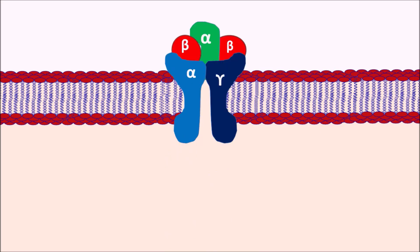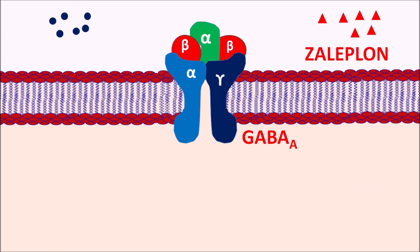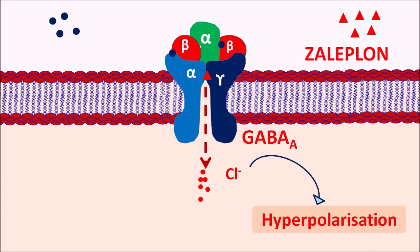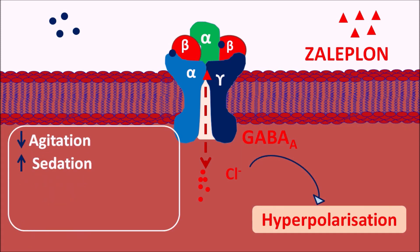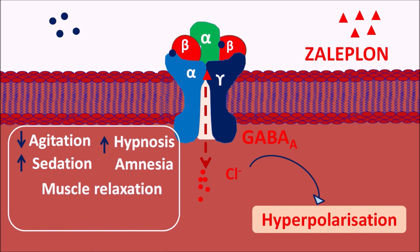Now let us see how this drug acts. Within the CNS, GABA-A receptors are expressed, which are ionotropic receptors and pentameric in nature — they are made up of 5 subunits. GABA can bind to these GABA-A receptors, which is facilitated by Zaleplon. Zaleplon can bind to an accessory site on GABA-A receptors so that it facilitates the binding of GABA, which opens the chloride channel. Chloride ions enter, producing hyperpolarization. This hyperpolarization produces an inhibitory response resulting in decreased agitation, increased sedation, increased hypnosis, induction of sleep, amnesia, some loss of memory, muscle relaxation, and loss of sensation.